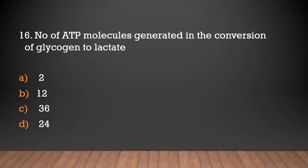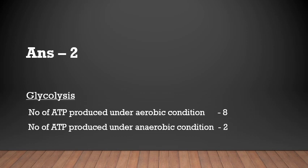Number of ATP molecules generated in the conversion of glycogen to lactate: 2, 12, 36, or 24? Answer: 3 (net). Under anaerobic condition, glycolysis produces 2 ATP from glucose; from glycogen the number is 3.